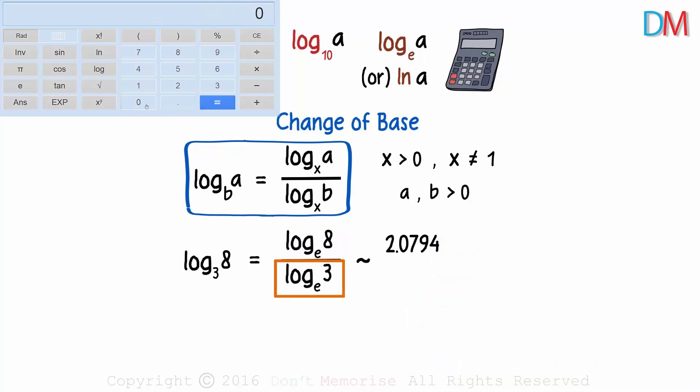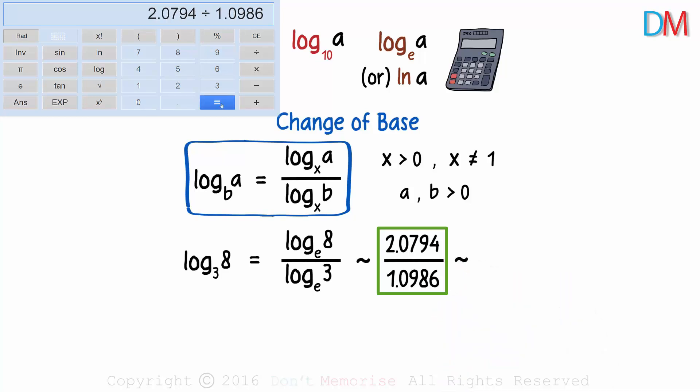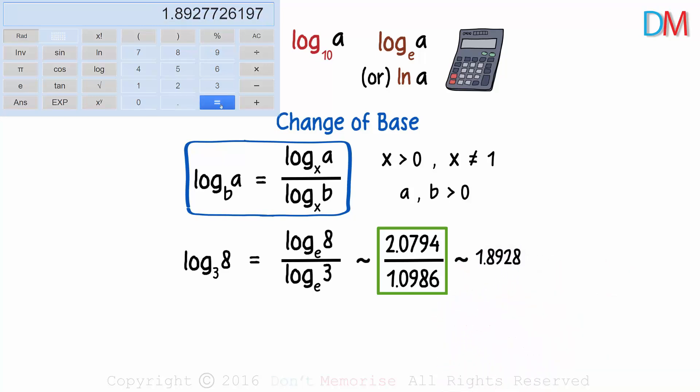In the denominator, we have the natural log of 3. That will approximately give us 1.0986. We write this in the denominator. And this value can be easily calculated using the calculator. 2.0794 over 1.0986 will give us 1.8928 approximately.